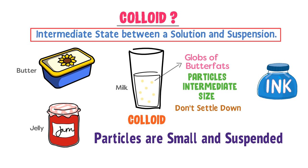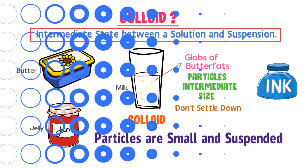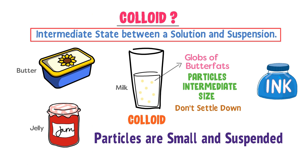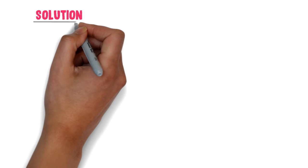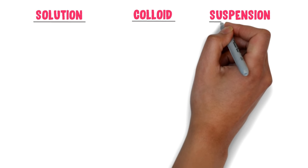The intermediate state between a solution and suspension is a colloid. The particles in a colloid are larger than those of a solution and smaller than those of a suspension. If a colloid is allowed to stand for some time, its particles will not settle down — for example, milk is a colloid. Now let's look at the differences between solution, colloid, and suspension.